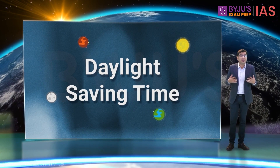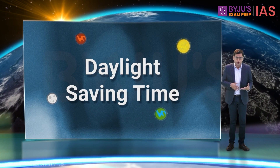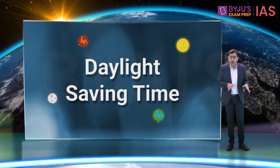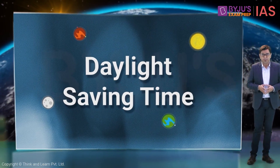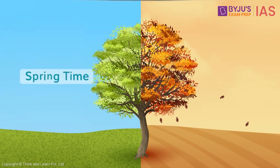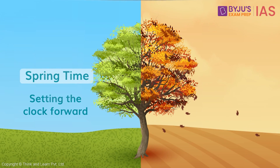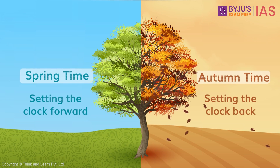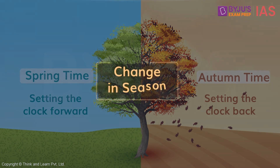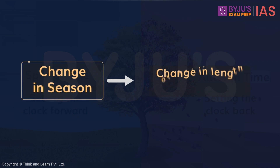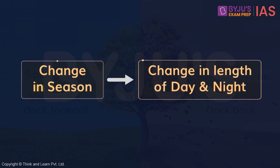Daylight Saving Time, or DST, is the practice of advancing clocks — typically by one hour — during warmer months so that darkness falls at a later clock time. Generally it is implemented by setting the clocks forward by one hour in the spring and setting them back by one hour again in the autumn to return to standard time. This is primarily done because of the change in season, which causes changes in the lengths of day and night. To understand this practice, let's first understand how seasons occur.